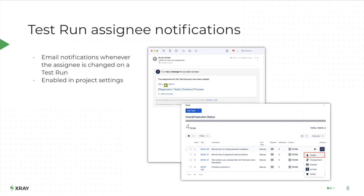Another feature we released was test run assignee notifications, something clients had requested. You can turn on this feature in X-Ray project settings. Whenever you assign a test run to a specific user, that user will receive an email notification about the assignment so they can immediately know what they need to execute in Jira.